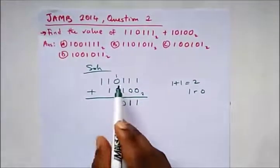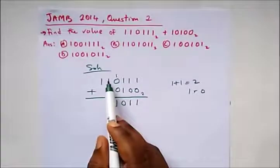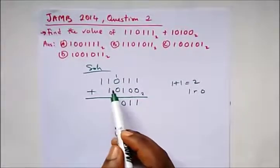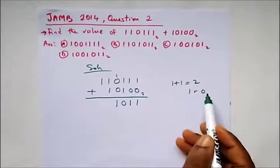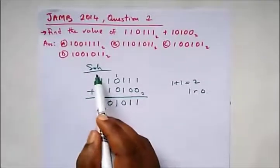So we have here 1 plus 0 will give us a 1. We have here 1 plus 1, which is 2. How many times would 2 go in 2? 1, remainder 0. So we write a 0 here and carry our 1.